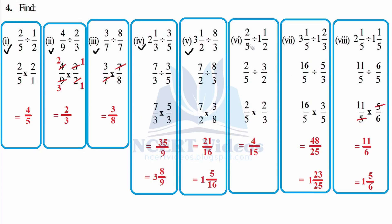Now here: 2/5 as it is, divided by 1 and 1/2 which is 3/2. So you cannot cut it here — do not make this mistake. You have to cut only when you convert it to multiplication. So the answer is 4 over 15.